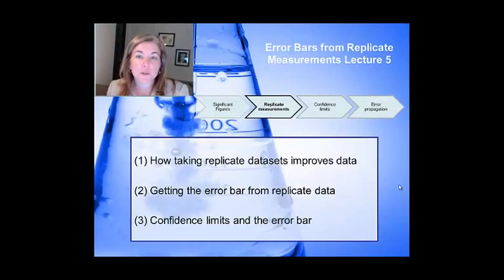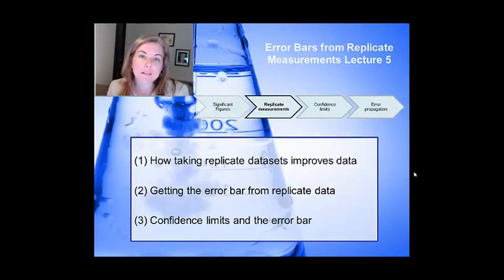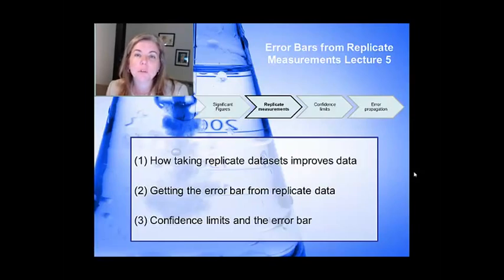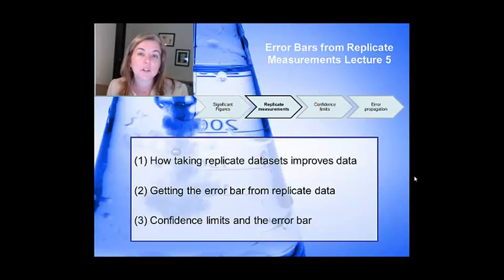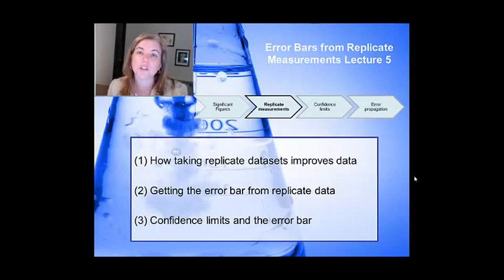Hi. Welcome to Coursera's Instrumental Analysis class. This is lecture five, and I'm Vicki Colvin. We're in the middle of a module talking about error in measurement. What I want to do in this module is go over something you should instinctively know: your ability to understand and characterize the error in a measurement is going to improve if you make replicate or identical measurements. It's through identical measurements that you can get a really good fix on the spread in your measurement, and actually characterize the random error or calculate the precision. That's what we'll be talking about today.